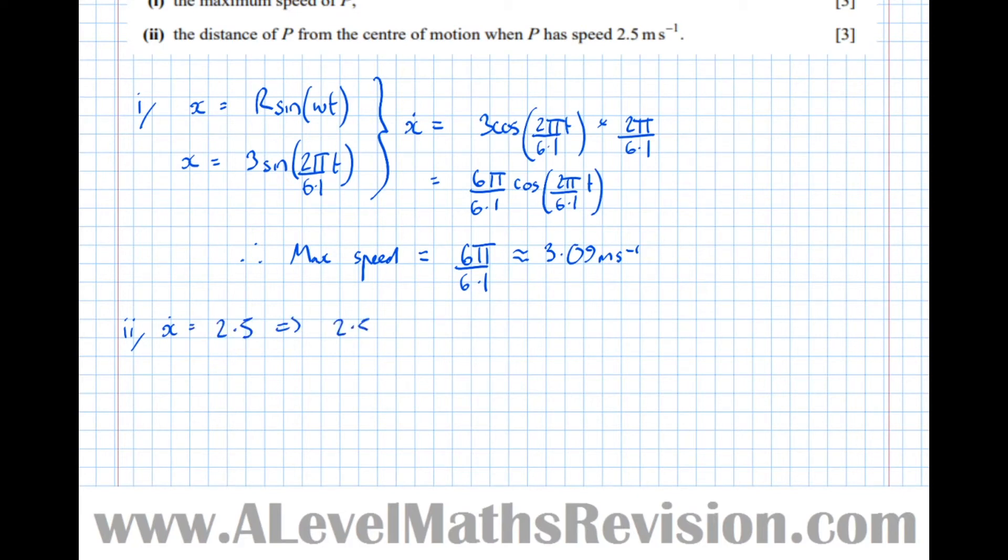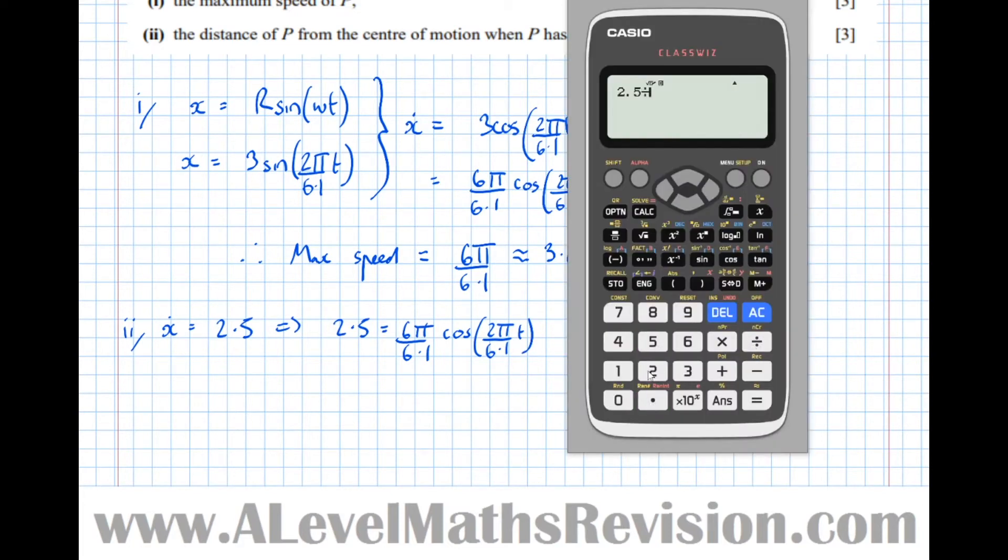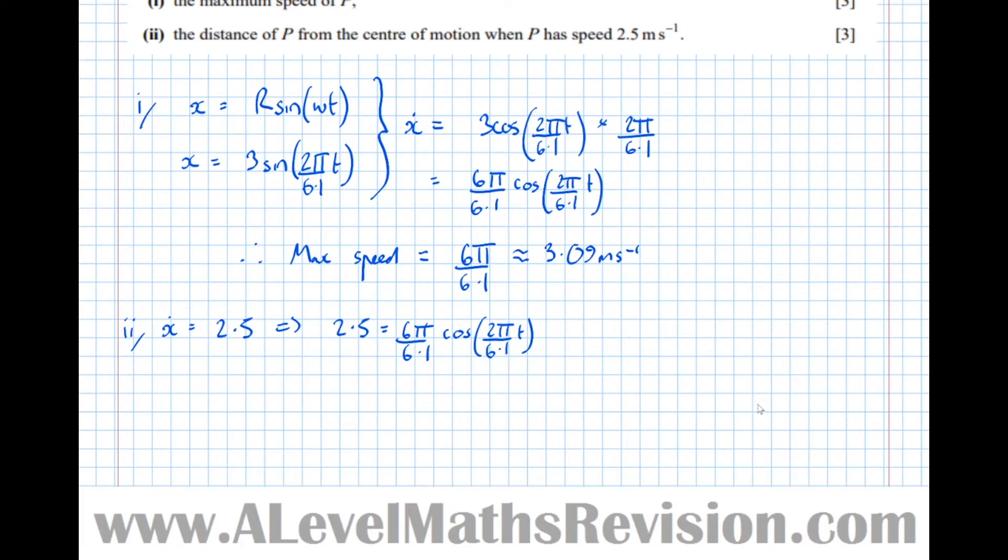We've got x dot equals 2.5, which means that 2.5 equals 6 pi over 6.1 cos of 2 pi over 6.1 t. Dividing by 6 pi over 6.1 we get 0.80904, which implies that 0.80904 equals cos of 2 pi over 6.1 t. If we arc cos both sides we get 2 pi over 6.1 times t equals 0.62828.